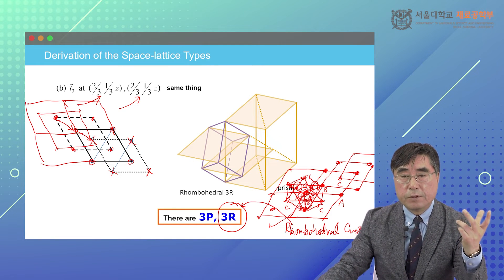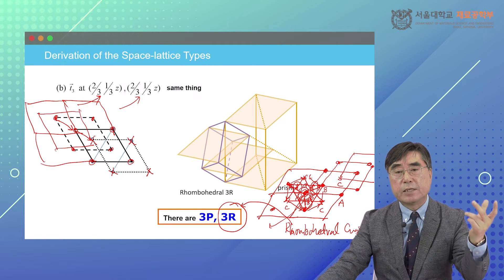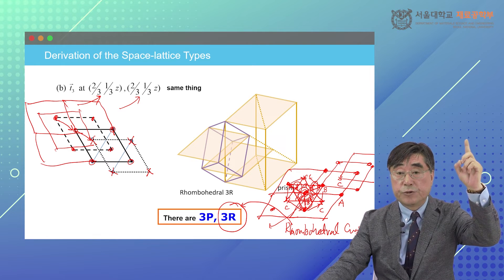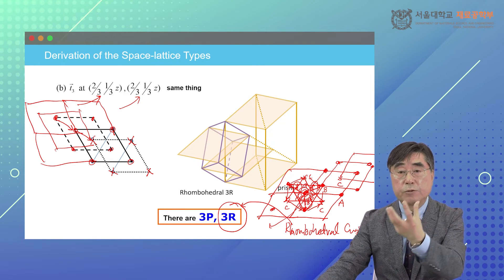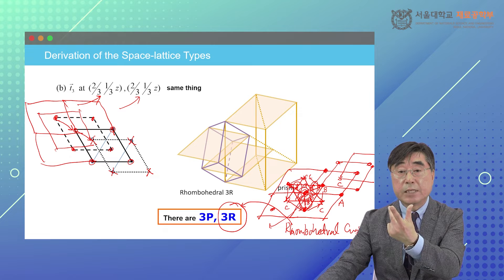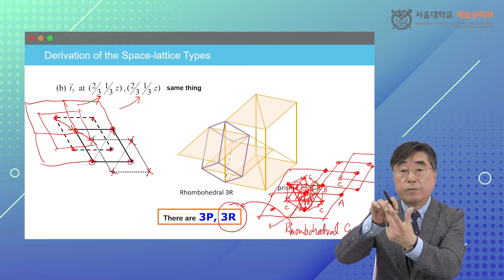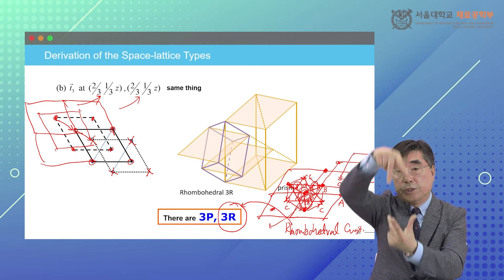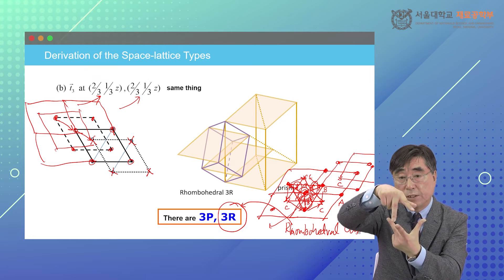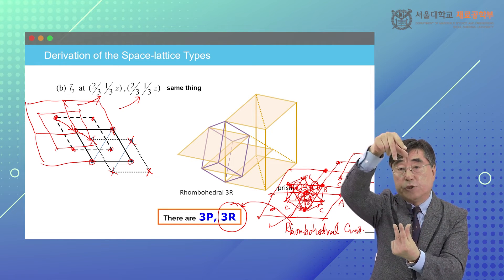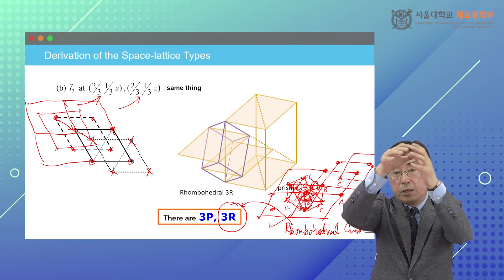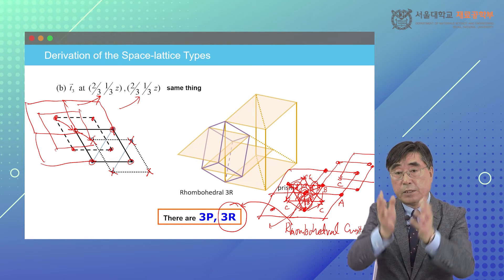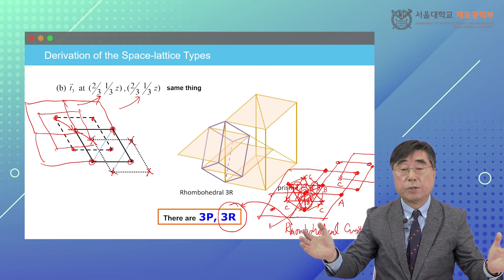Starting from three-fold, we can develop two different crystal systems: one is hexagonal crystal system, where the T3 axis is perpendicular; and one is rhombohedral crystal system, where T1, T2, T3 are the same size and the angles alpha, beta, gamma are all equal. Depending on where you put the G positions, it can be elongated or shrunk, but the angle should be the same. This is the rhombohedral crystal system, with only one primitive rhombohedral Bravais lattice.